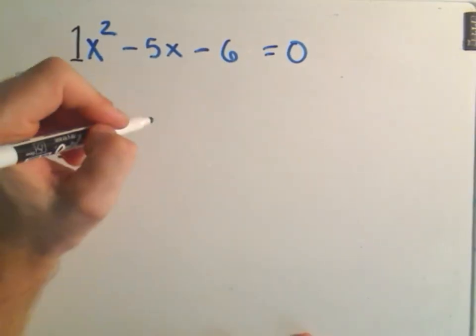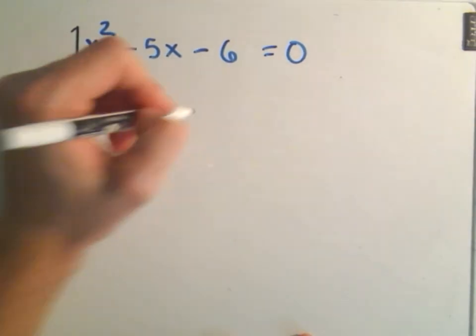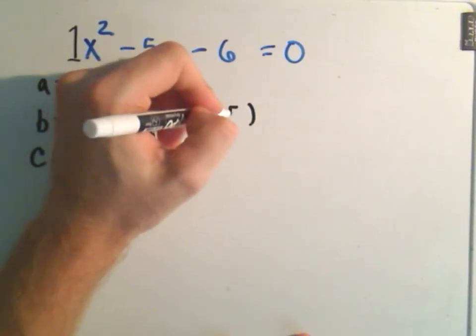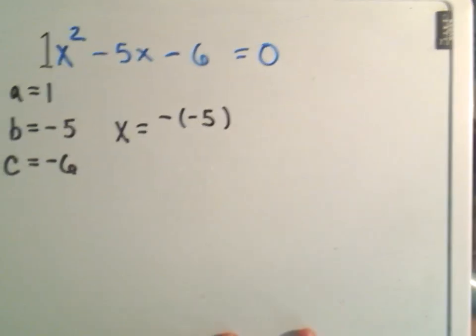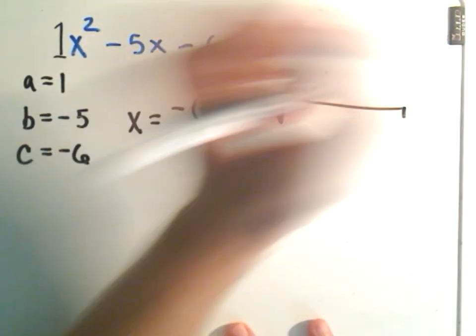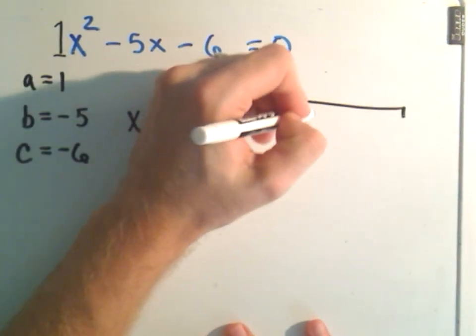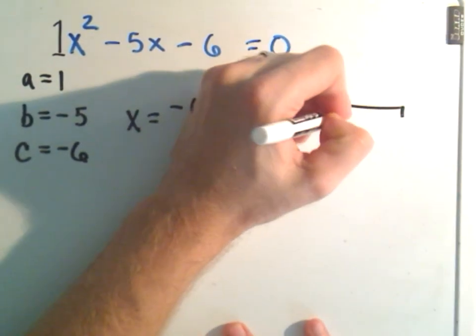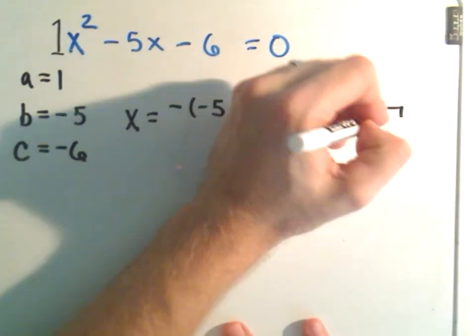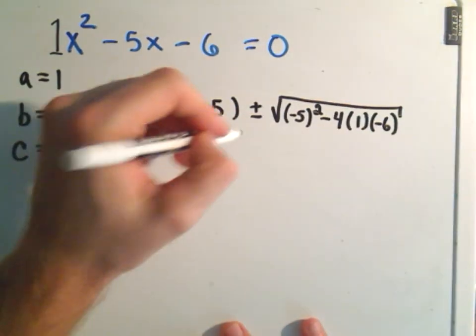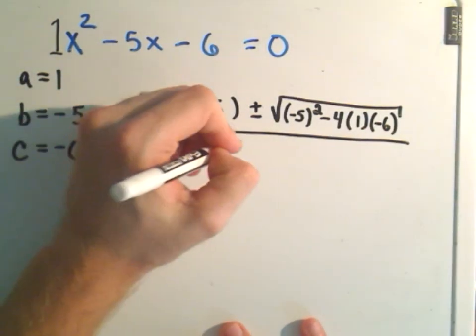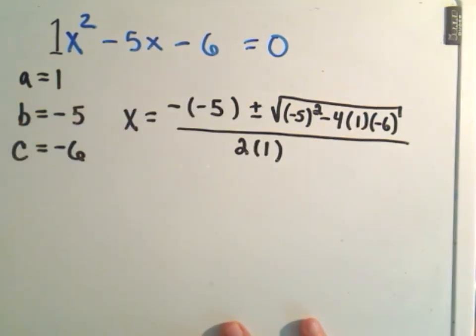Our solutions are x = -b. b in this case is -5, so I'll get -(-5) plus or minus the square root of b squared—that's (-5)² minus 4 times a, which is 1, times c, which is -6. That's all divided by 2 times a, which is 1.